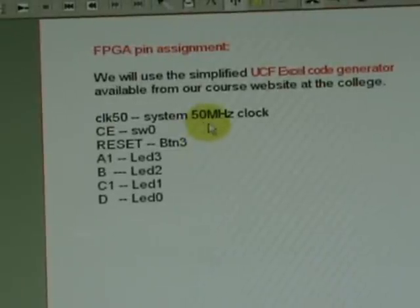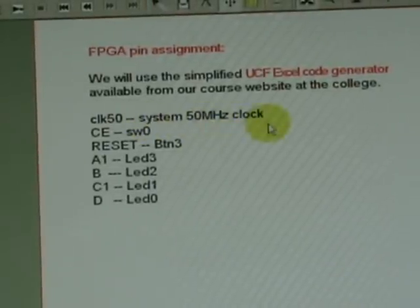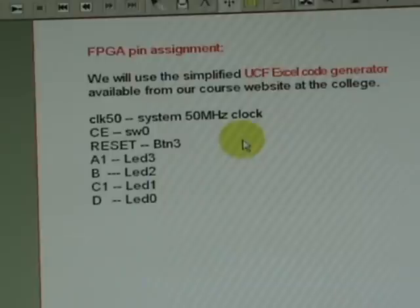The system board has a very high clock, 50 megahertz. So we're going to slow down by dividing that by 2 raised to 26, and we're going to use three binary cascadable counters.